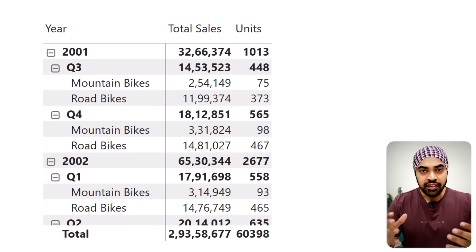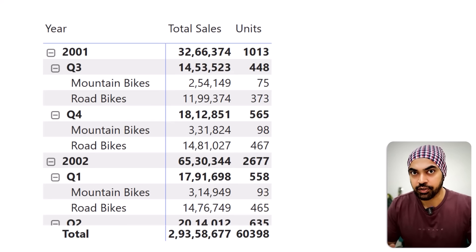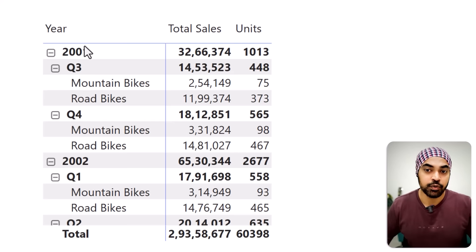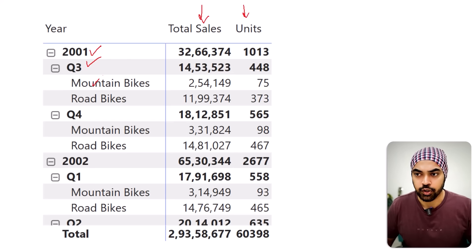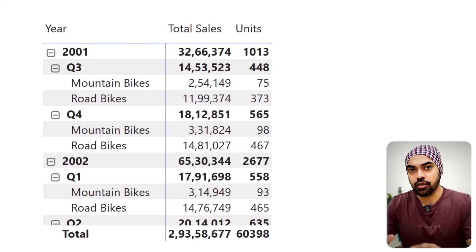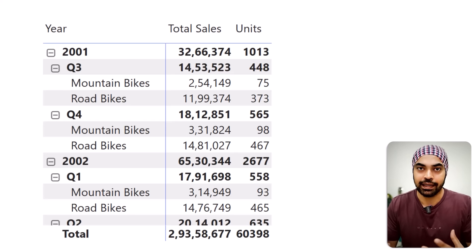When you start creating a basic table or matrix visualization, you will end up creating something like this — where I have year, quarter, and subcategory of the product, and against that I have total sales and total units. If this is what you're sticking into your dashboard, it's not going to look elegant. So let's start working on this table visual and layer it with different ideas and strategies to make it look beautiful and elegant.